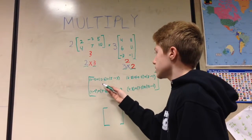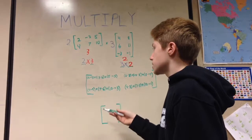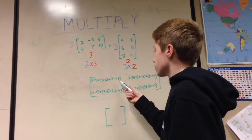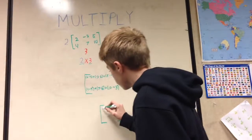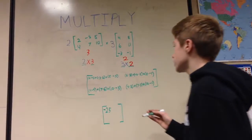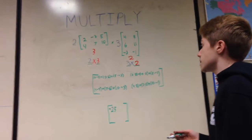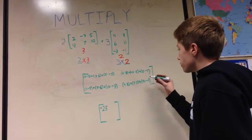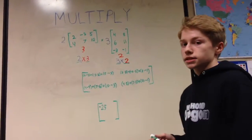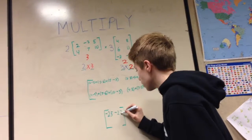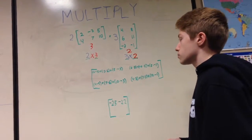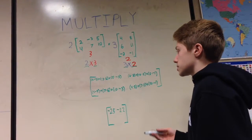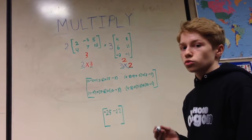For the top left: two times four equals eight, negative three times six is negative eighteen — so negative ten so far — and five times negative three is negative fifteen, giving negative twenty-five. For the upper right: two times eight is sixteen, plus negative three times eleven is negative thirty-three — so negative seventeen — and five times negative one is negative five, giving negative twenty-two for the upper right. For the bottom left: four times four equals sixteen, seven times six equals forty-two — that's fifty-eight — and ten times negative three is negative thirty, so that equals twenty-eight.